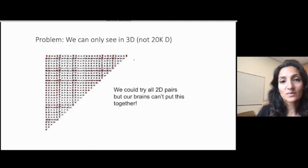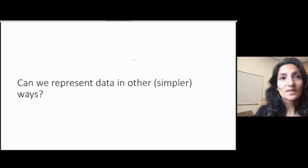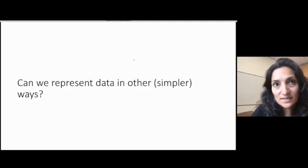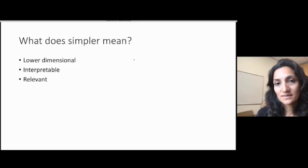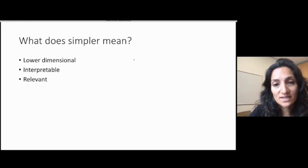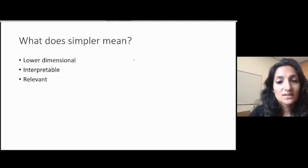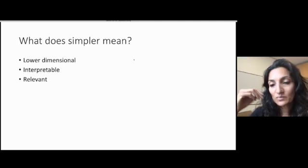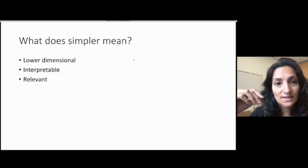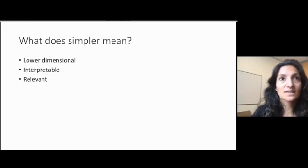But given that we're visual creatures and we want to intuitively understand the data, we can try to represent the data in other ways, potentially simpler ways. What do we mean by simpler? Simpler could mean lower dimensional, as I just said. So taking a four or five dimensional dataset and trying to render it into two or three dimensions. It can mean more interpretable. It can mean with more of the relevant information in and less of the irrelevant information or noise in. And these are all things that we will discuss in future lectures.